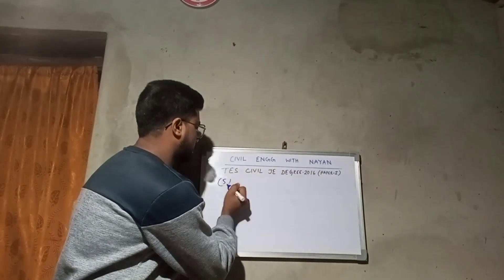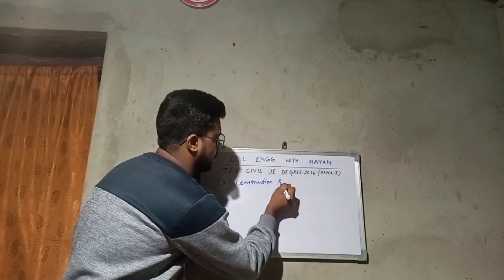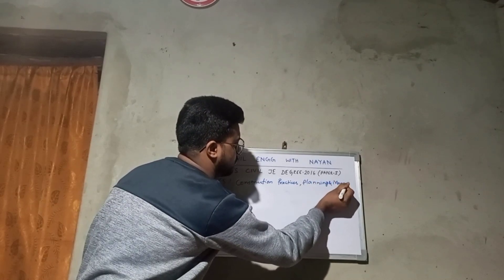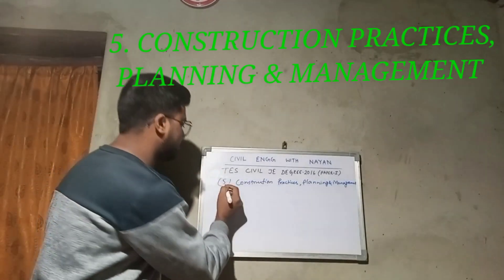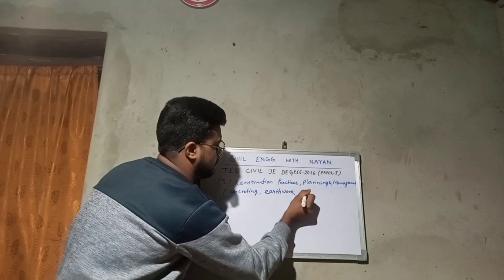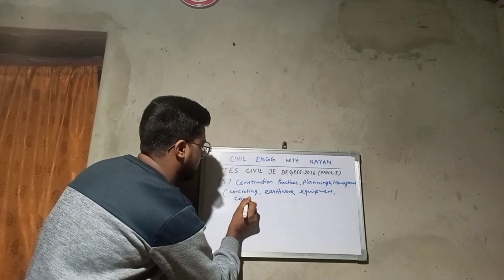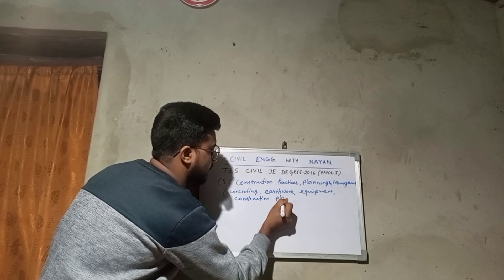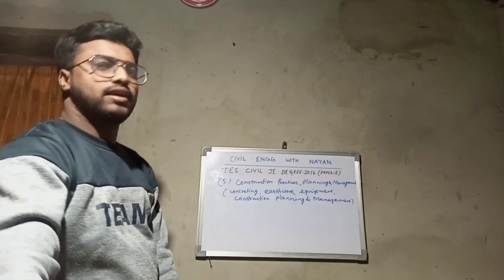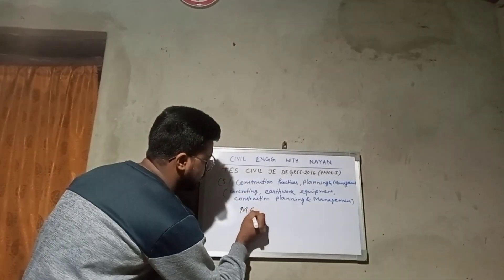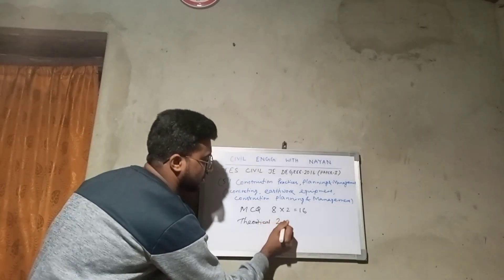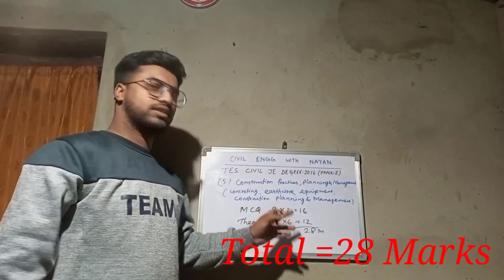The last subject is Construction Practices, Planning and Management. For this subject: MCQ is 8 into 2, that is 16 marks. Theoretical is 2 into 6, that is 12 marks. The total is 28 marks.